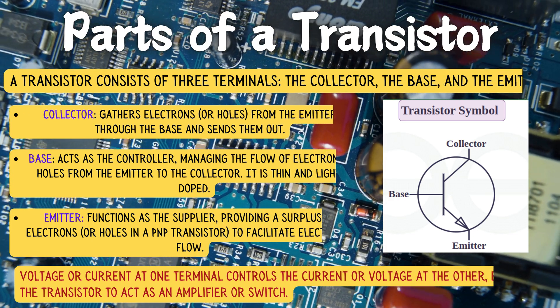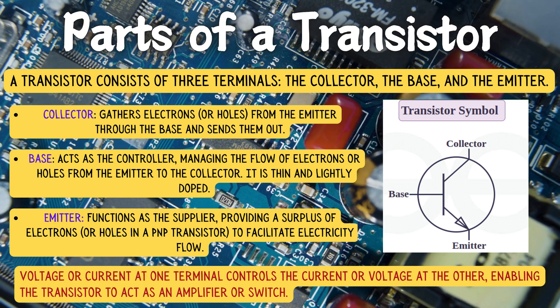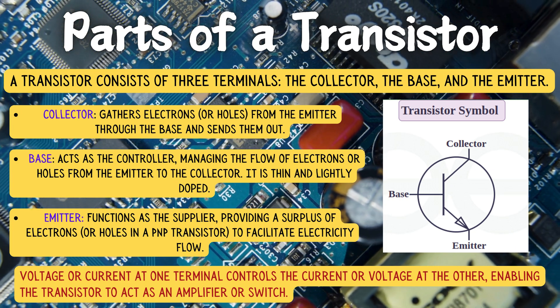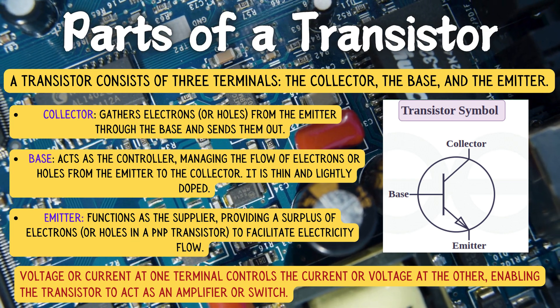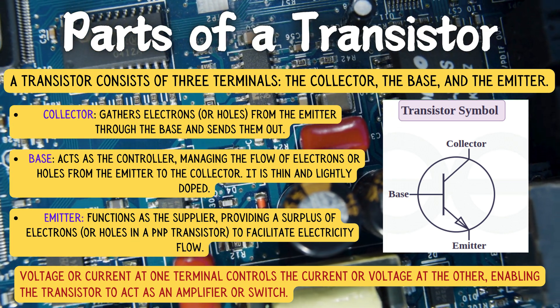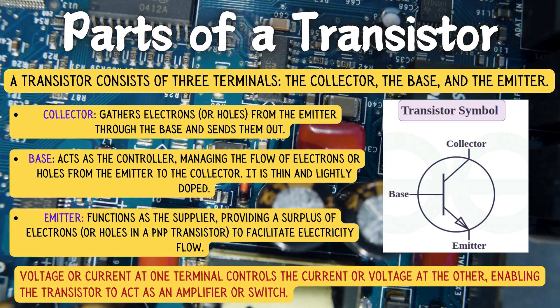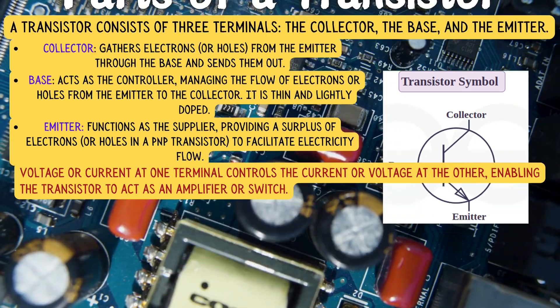The collector gathers and sends out electrons or holes. The base controls the flow from emitter to collector. The emitter supplies electrons or holes. Voltage or current at one pair of terminals controls the other pair, allowing the transistor to act as an amplifier or switch.